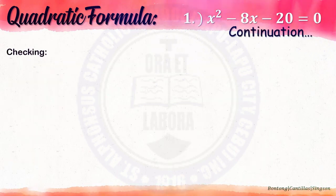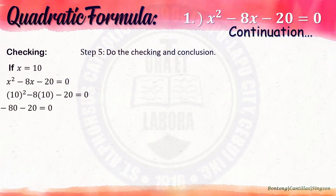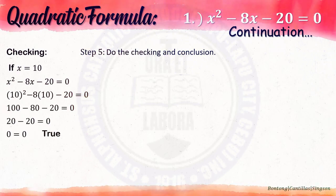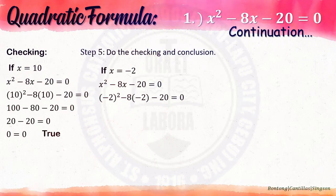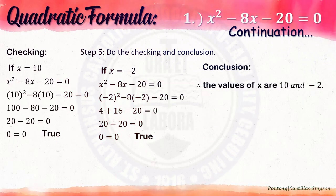Checking and conclusion: if x is 10, substitute into the given equation, simplify — 0 equals 0, which is true. If x is negative 2, substitute the value, simplify — 0 equals 0, also true. Conclusion: therefore, the values of x are 10 and negative 2.